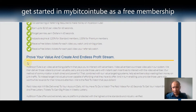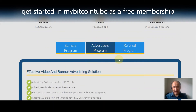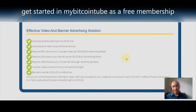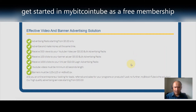Ad packs expire at 120 percent for standard members, proving value and creating an endless profit stream. They also have an advertisers program with an effective video and banner advertising solution. Advertising packs start at only five dollars — you receive 500 views to your YouTube video per five-dollar bulk advertising pack, 100 clicks to your banner ad per five-dollar pack, and 1,000 clicks to your link per ten-dollar login advertising pack. YouTube videos must be a minimum of 60 seconds.